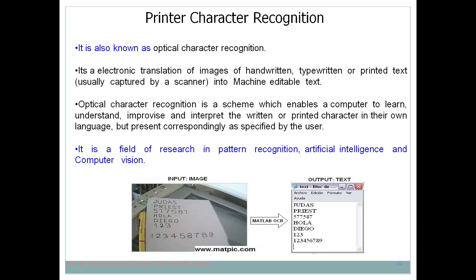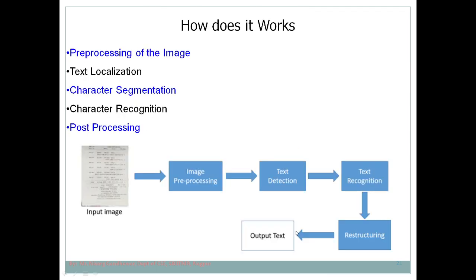Computer vision means giving the ability to a computer to capture, visualize, and interpret images. OCR is one of the hot research topics in computer vision. Let's understand how OCR exactly works using a diagram. Suppose the input image is a bill from a supermarket — we need to extract the text present in that bill and store it in an Excel file.